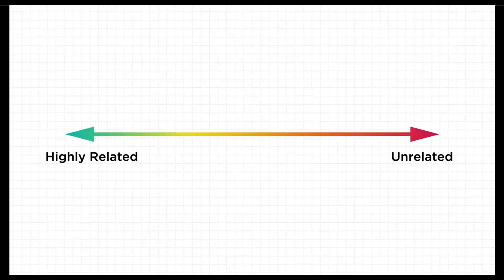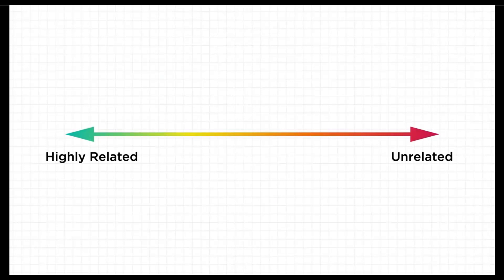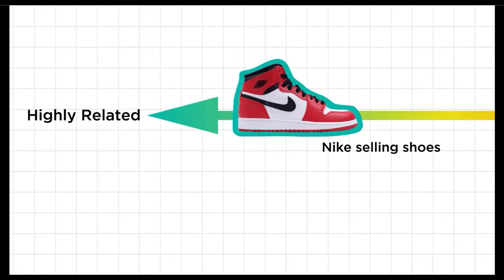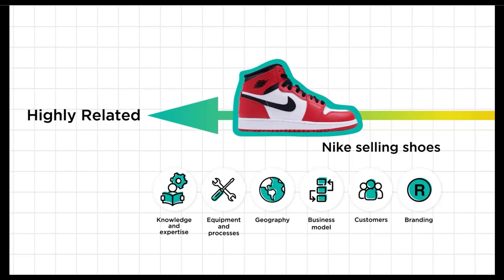Let's look at a few examples, starting with highly related diversification. When Nike expanded from premium mass market running shoes into premium mass market basketball shoes sold through the same retailers it already uses, this leveraged the same knowledge and expertise, the same brand, the same equipment and processes, the same customers and geography, and the same business model.